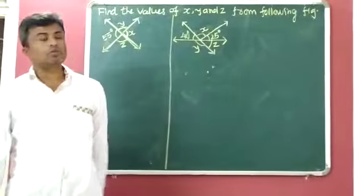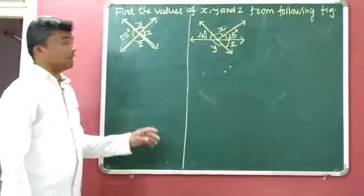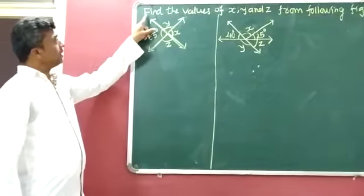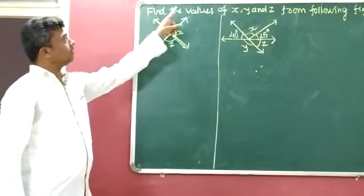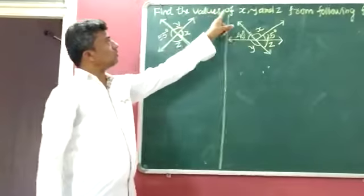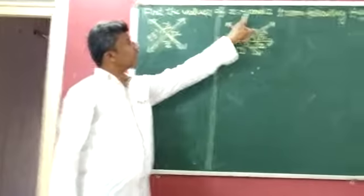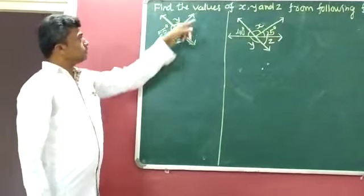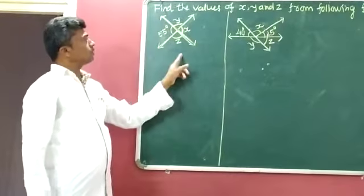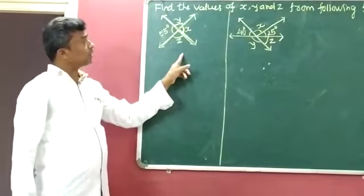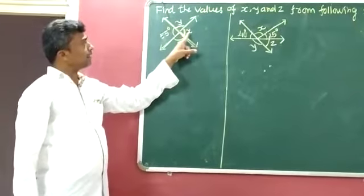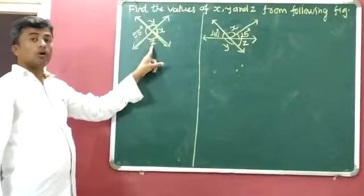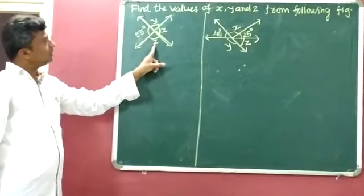Now I will explain question number 12. Question number 12: find the values of X, Y and Z from the following figure. From these figures we have to identify the value of X, value of Y and value of Z.